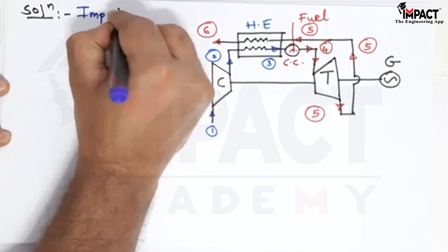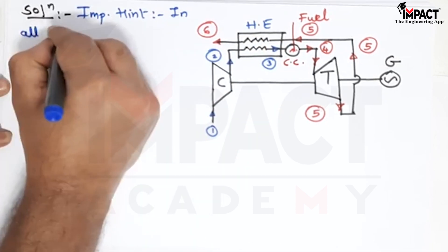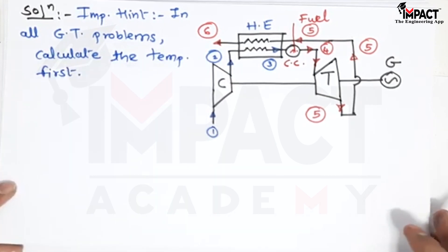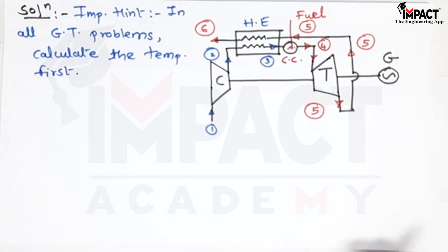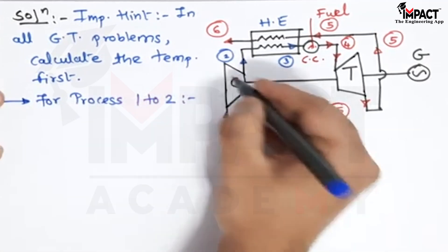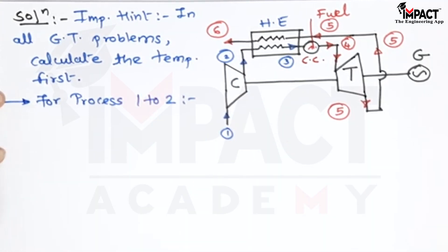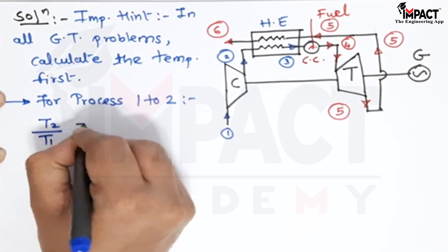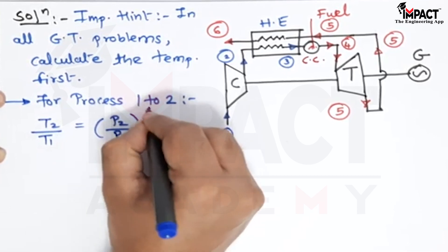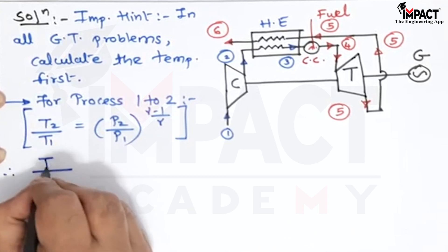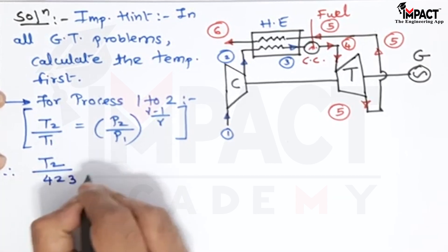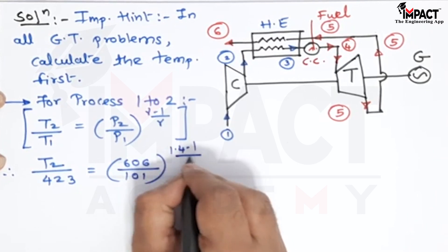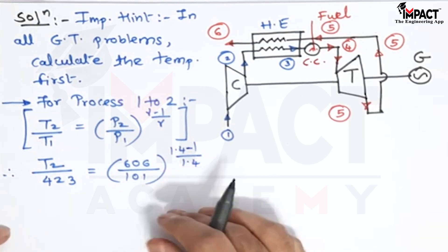An important hint in all gas turbine problems: calculate the temperatures first. For process 1 to 2, isentropic compression applies, so the relation is T2 upon T1 equals (P2 by P1) raised to (gamma minus 1) upon gamma. T1 is 423 K, P2 is 606 kN/m², P1 is 101 kN/m², and gamma is 1.4 for air.